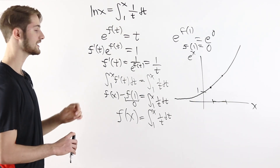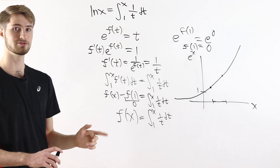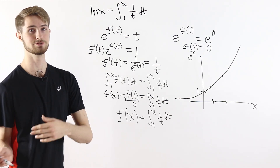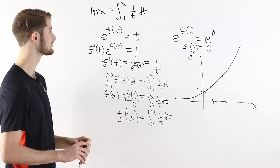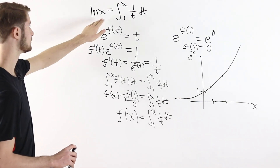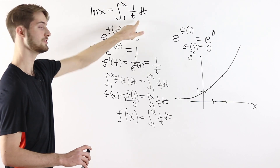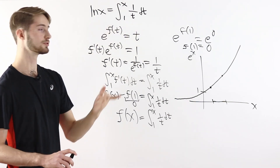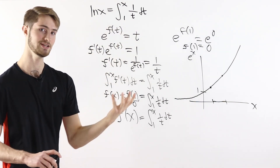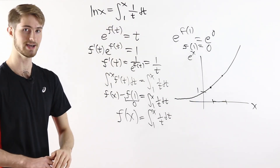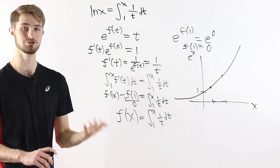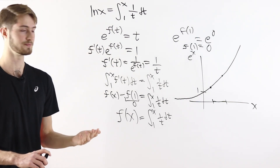In fact, some calculus textbooks don't define the natural log as the inverse to e to the x. Instead, they define the natural log as this integral, and prove that this integral is an inverse to e to the x. So this video is an example of how you can do that proof.